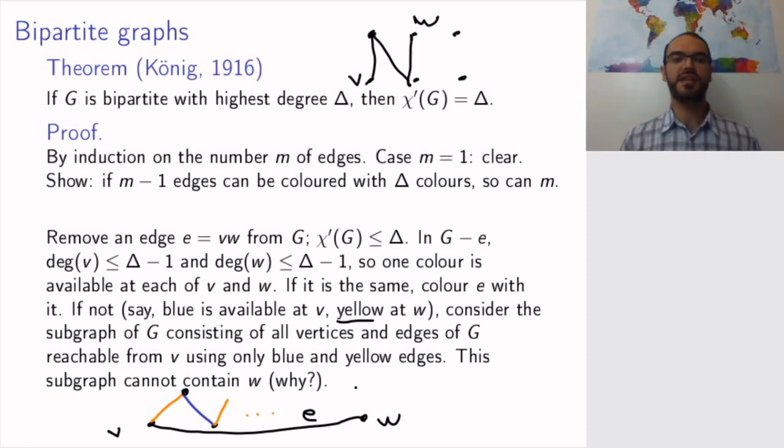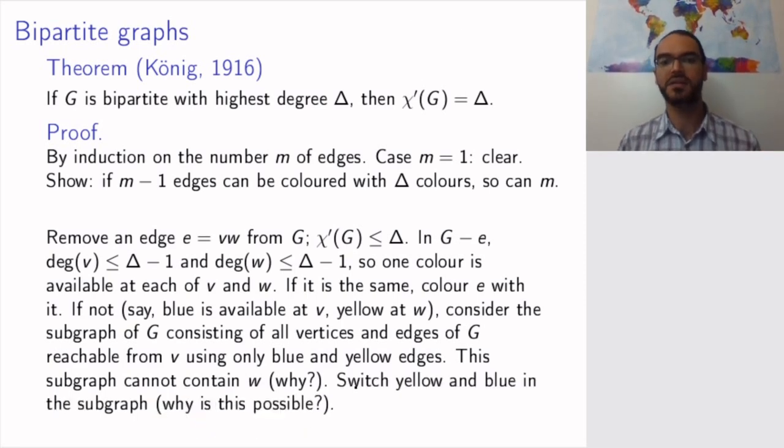So then in this subgraph, you can flip the colors, recolor this subgraph, making the yellow edges blue and the blue edges yellow and leaving all other colors the same. This is possible because you can always swap colors. You can take the entire graph and say, okay, in the whole graph, I'm changing blue to yellow and yellow to blue. This will not change anything. This is just renaming the colors.